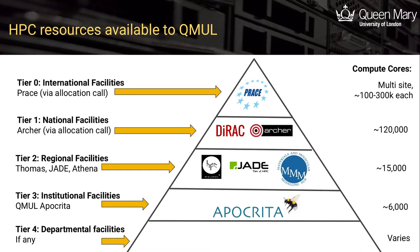Note that these higher tier systems don't actually have faster hardware — just more of it — and many of the applications that use them are designed to scale up well to use many computers at once. We pay to be part of consortia which give access to three tier 2 systems, typically for doing EPSRC funded work. One of these systems is a GPU cluster, and they represent good value given the massive investment required to double or treble the size of Apocrita.